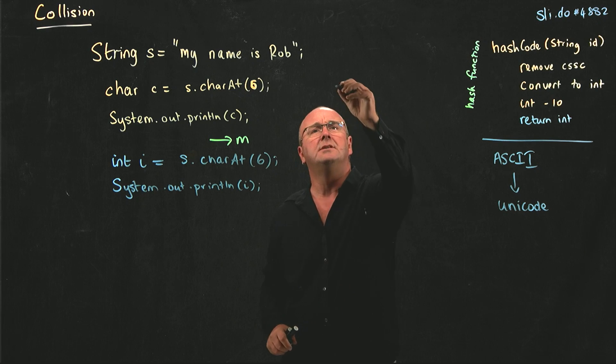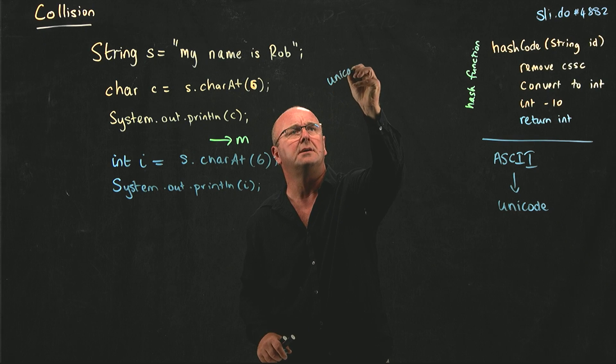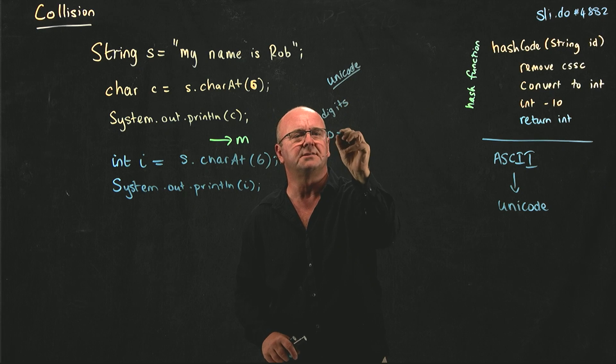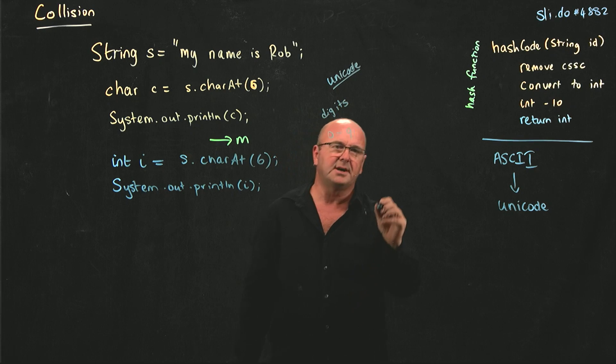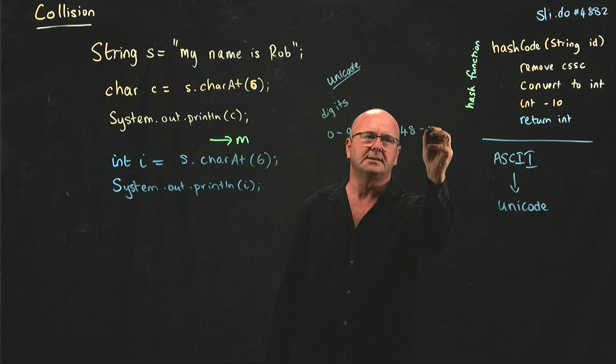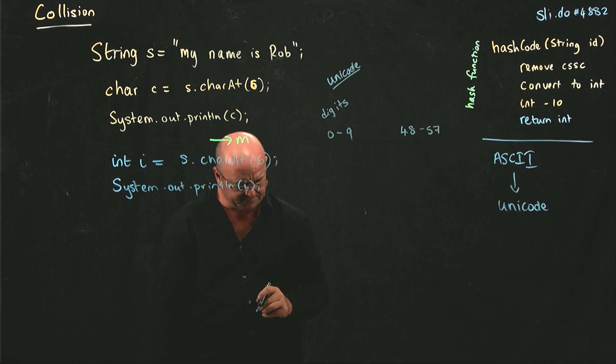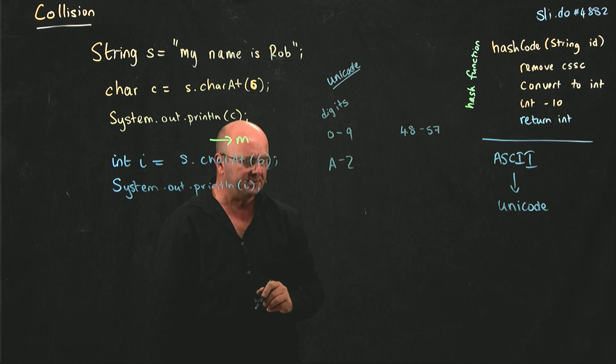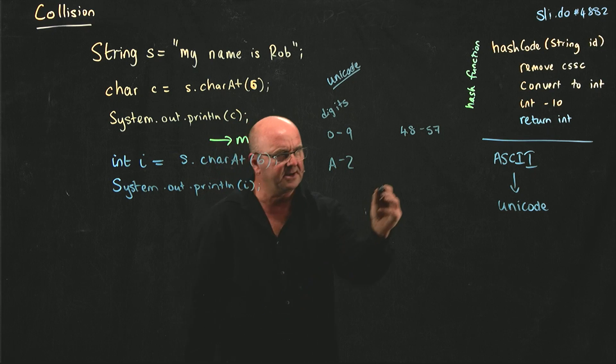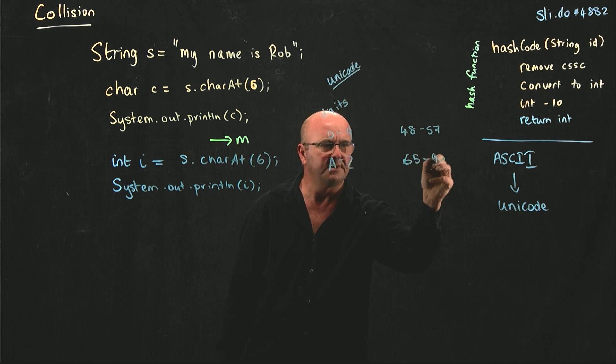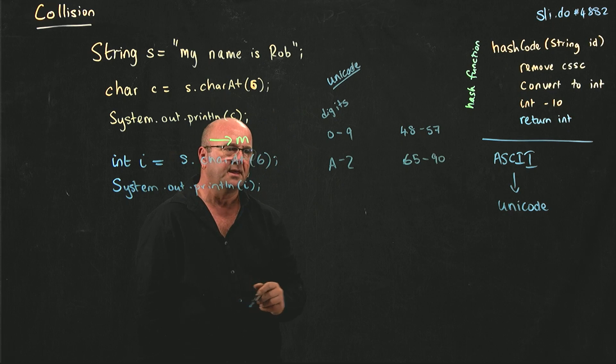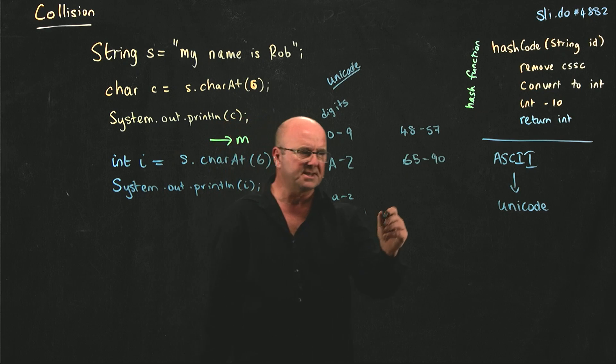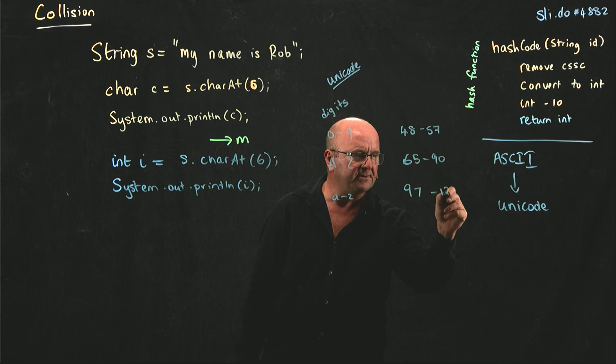So in Unicode, the digits 0 through 9 are represented by the numbers 48 to 57. In Unicode, capital letters A through Z are represented by the numbers 65 through 90. And the lowercase letters a through z are represented by the numbers 97 through 122.